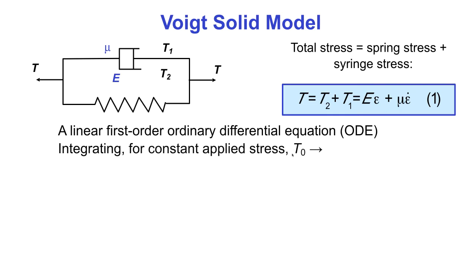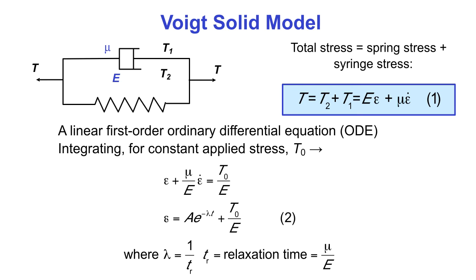Integrating for a constant applied stress T0, we again get an exponential solution: epsilon equals A e to the minus lambda t plus T0 over E. Here lambda equals E over mu, so the relaxation time is mu over E. The larger the viscosity relative to the elastic term, the slower the creep; in the limit with no dashpot, the response would be instantaneous.